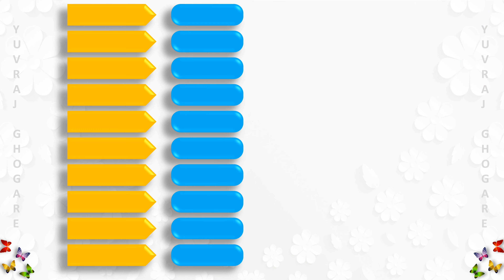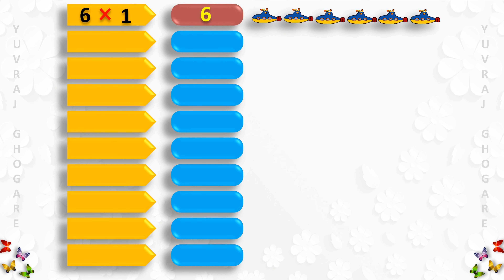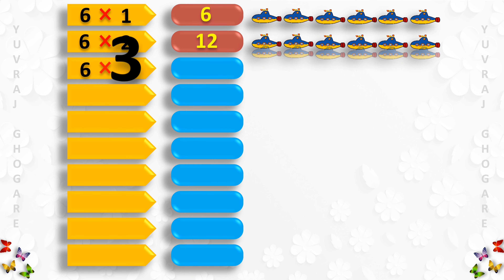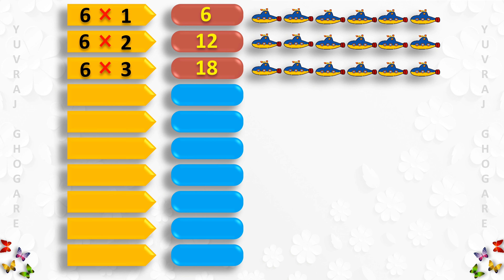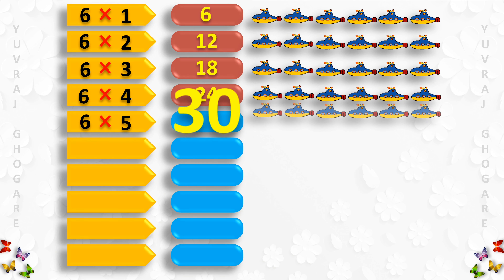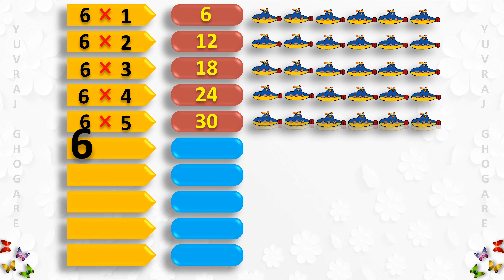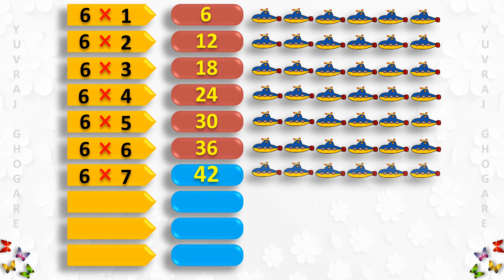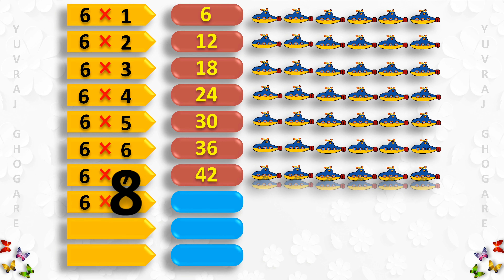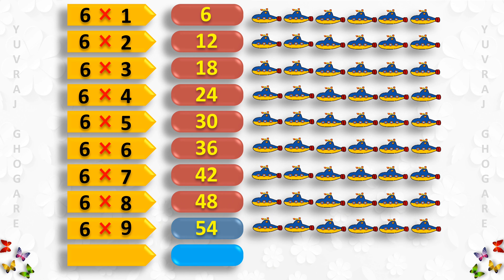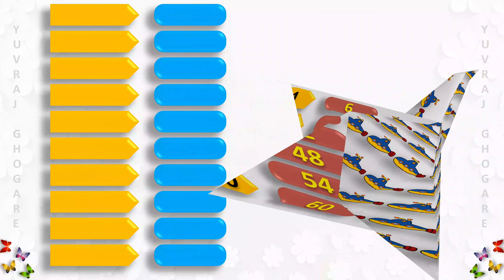Table of 6: 6 1s are 6, 6 2s are 12, 6 3s are 18, 6 4s are 24, 6 5s are 30, 6 6s are 36, 6 7s are 42, 6 8s are 48, 6 9s are 54, 6 10s are 60.